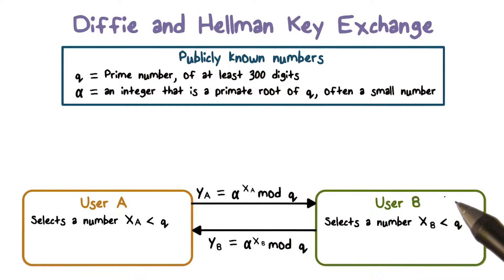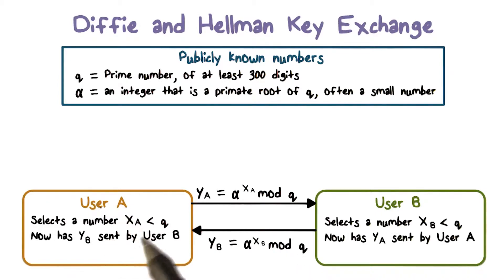Likewise, user B independently selects a random integer xb that's less than q and then computes yb that is alpha raised to the power of xb and then mod q. Each side keeps the x value private and then sends the y value to the other side.